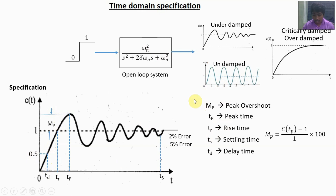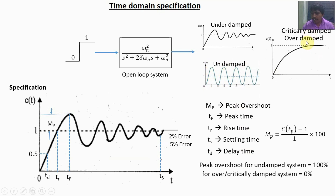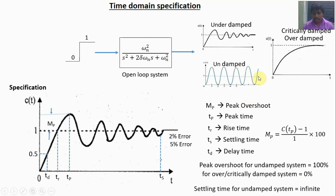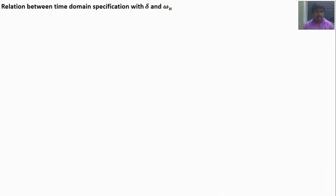For an undamped system, maximum peak occurs, so the peak overshoot is 100%. For a critically damped or overdamped system, there is no peak, so the peak overshoot is 0%. The settling time for an undamped system is infinite — it does not settle. Without using formulas, you should know these values.